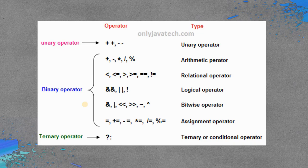Now we are going to see that there are several sub-classifications within binary operations. As you can see on the right side of your screen, binary operators include arithmetic operators, relational operators, logical operators, bitwise operators, and assignment operators. We are going to learn about each of these operators one by one.